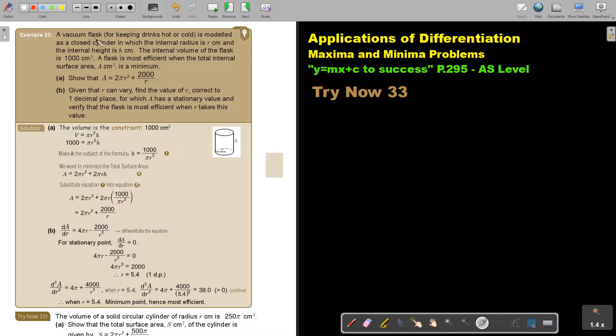A vacuum flask for keeping drinks hot or cold is modeled as a closed cylinder in which the internal radius is R cm and the internal height is H cm. The internal volume of the flask is 1000 cm³. A flask is most efficient when the total internal surface area A cm² is a minimum. Show that this area is given by this formula.